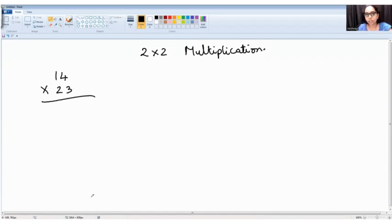So the answer will have 3 parts. The first part, the rightmost part, is obtained by multiplying these 2 digits. 4 x 3 is how much? It is 12. The leftmost part of the answer is obtained by multiplying these 2 digits. So it is 1 x 2 is 2.